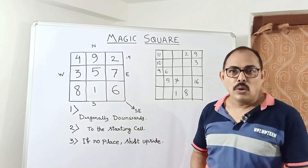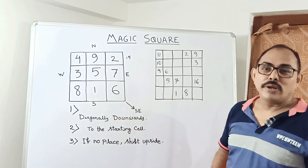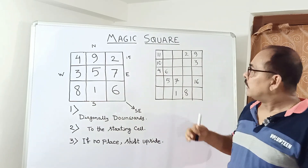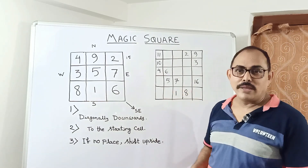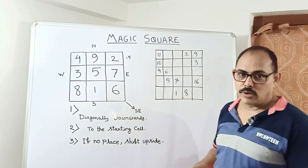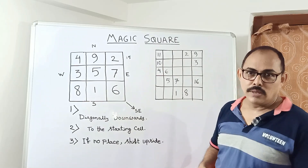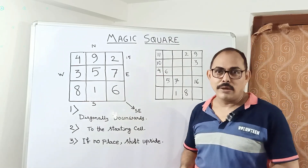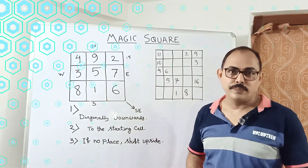We will meet in our next session with the second part of magic square, which is the 4 by 4 order magic square. Until then, goodbye and have a nice day.